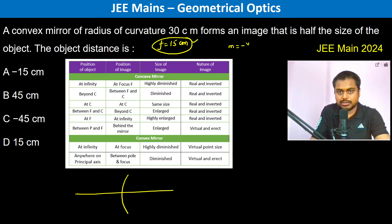Magnification is minus V by U equals height of image is half of the height of object. Therefore V equals minus half of U. In a convex mirror, the image is found behind the mirror and it is virtual and erect. So if this is X, this is going to be X by 2.